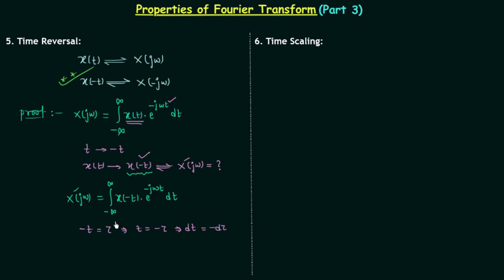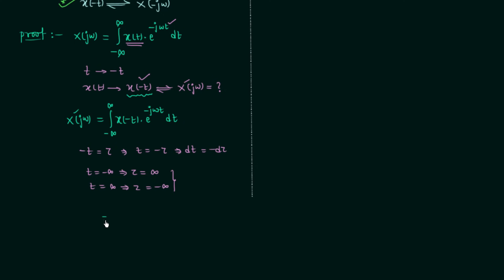We will change the range of integration. When t equals minus infinity, tau equals infinity, and when t equals infinity, tau equals minus infinity. So we write X(jω') as integration from plus infinity to minus infinity of x(τ) multiplied by e^(-jω·(-τ)), which becomes e^(+jωτ), times minus dτ.